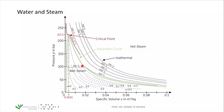Beneath the saturation curve, we have wet steam — a mixture of liquid water and gaseous water. The dashed lines represent the share of water and steam: for example, 0.3 means 30% gaseous and 70% liquid water. Also marked in red is the critical point for water at 221.3 bars, a temperature of 347.15 degrees Celsius, and a specific volume of 0.0031 cubic meters per kilogram. At this point, the liquid phase vanishes — we don't get any liquid phase of the water anymore.